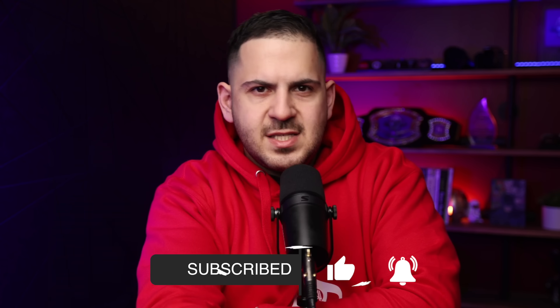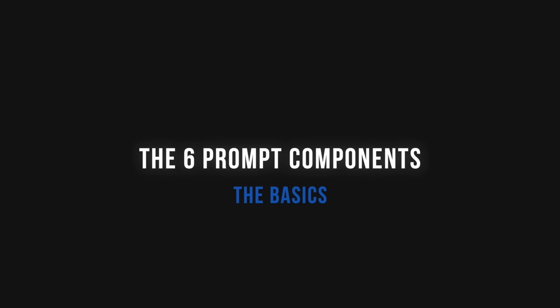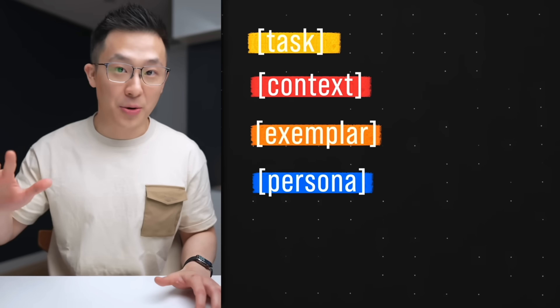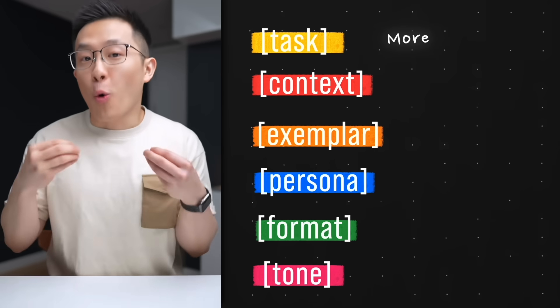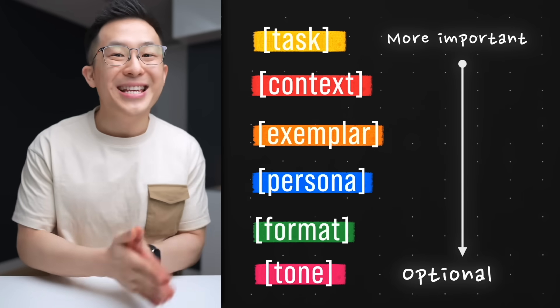Now let's talk about the basics of prompt engineering. If you've watched any online videos you've probably seen this formula floating around. There are six components: task, context, exemplars, persona, format, and tone — and there's also an order of importance to these six components. The task is your must-have starting point. The AI can't read your mind, so you need to straight up tell it what you want, starting with an action verb.